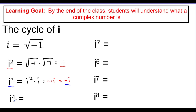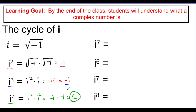Now i to the fourth is the same as i squared times i squared. We already know i squared is negative 1, so this is negative 1 times negative 1, which is positive 1. So i to the fourth equals 1. Notice we have exactly four values: i, negative 1, negative i, and positive 1 — none of them have any exponents attached.